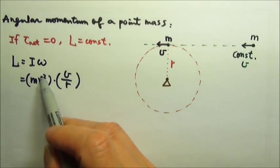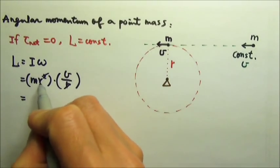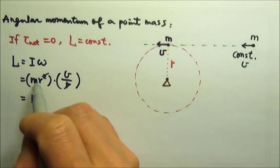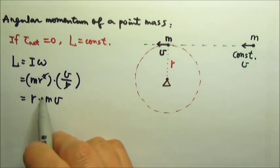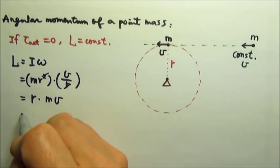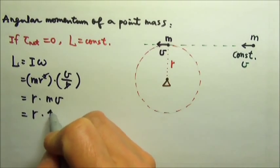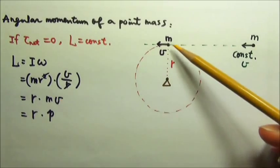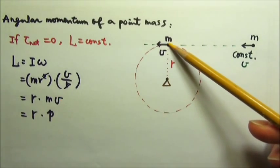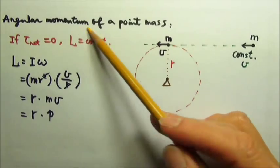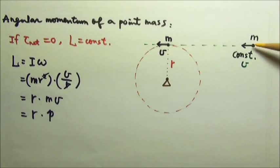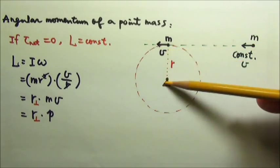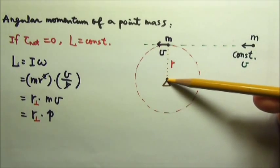So we can cancel one of the R's, and this will give us, there's one more R left, R times MV. So it's R times the momentum, MV. So this is the angular momentum of the point mass when it gets to this location. Since the angular momentum stays a constant, that means this is the same angular momentum when the mass is here.